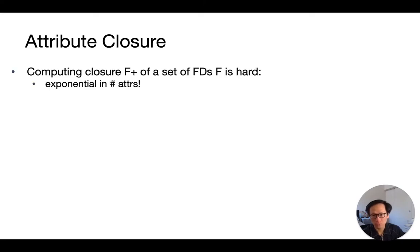Computing the closure F+ of a set of functional dependencies F is hard. Hard in the computational complexity sense. Turns out it is actually exponential in the number of attributes.